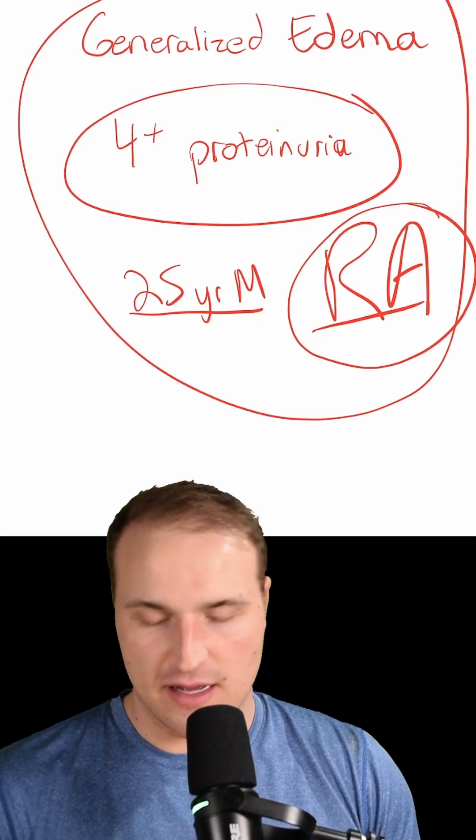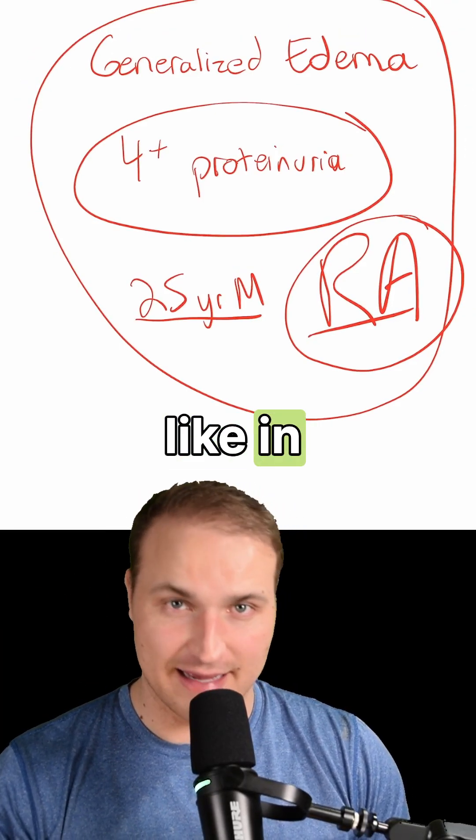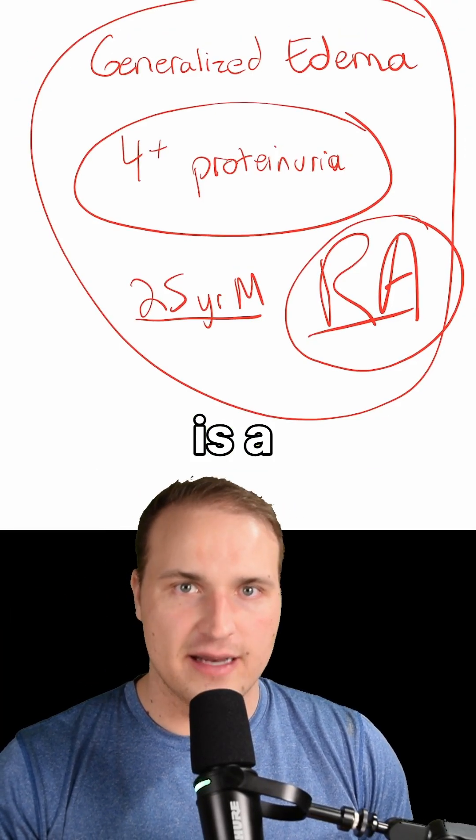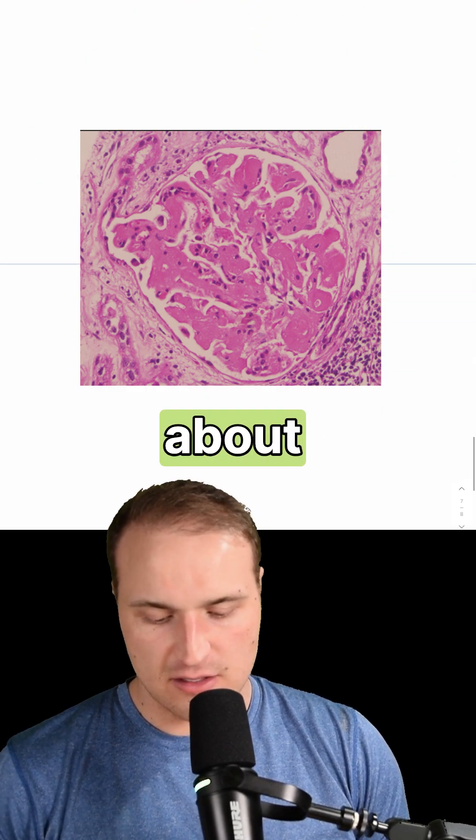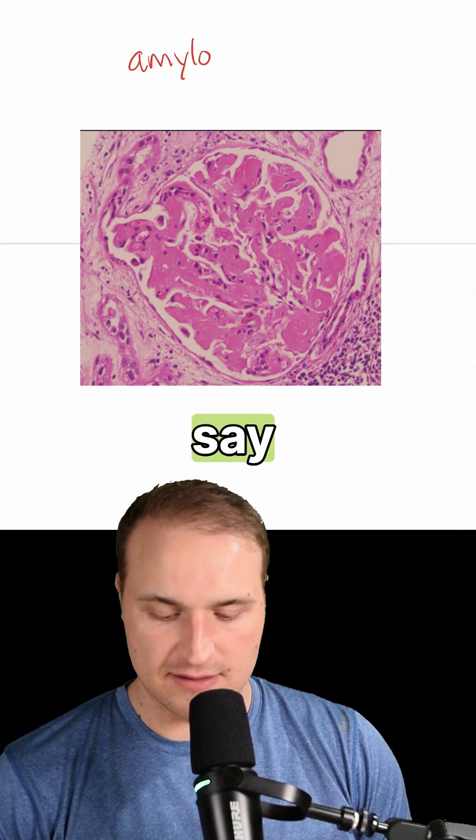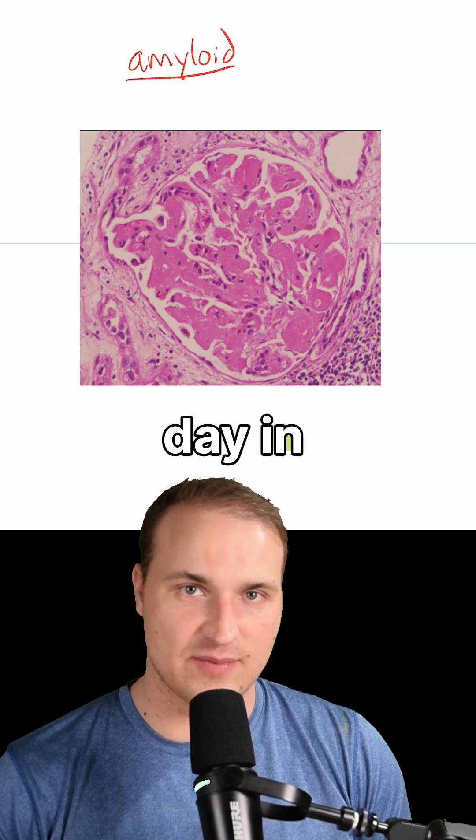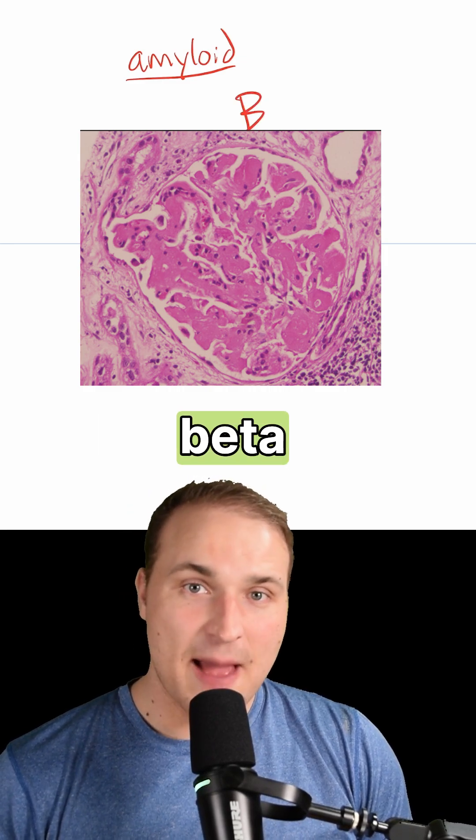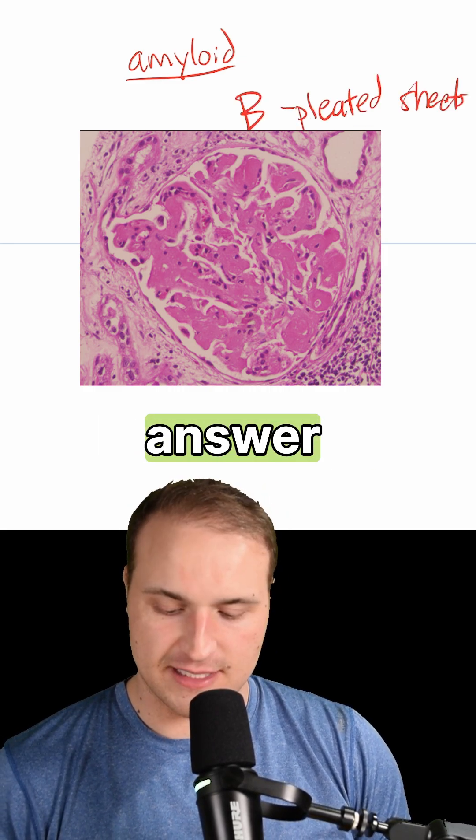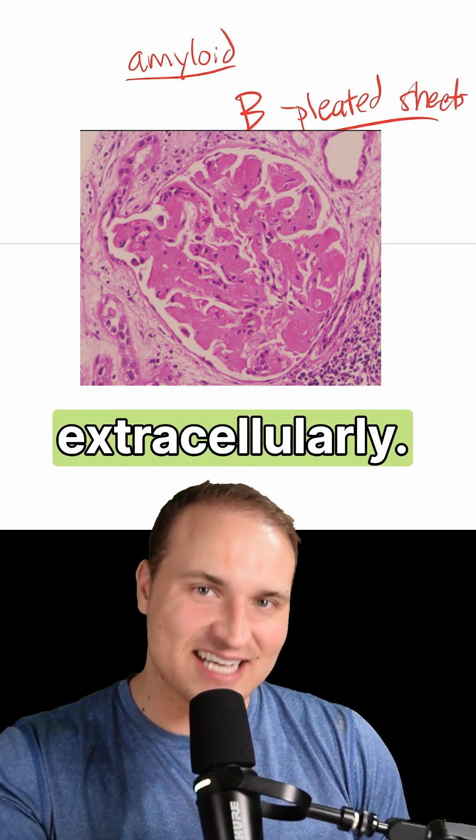Another thing that might get you is what does amyloid look like in the glomerulus? Amyloid is a misfolded protein. What you need to know—a student said this was tested on his exam in December—is that it forms beta-pleated sheets. That was the answer they chose. It deposits extracellularly.